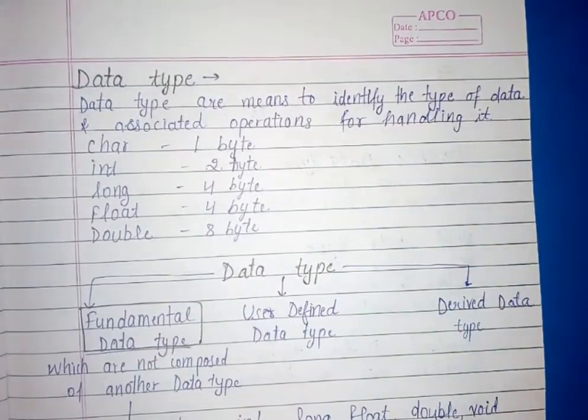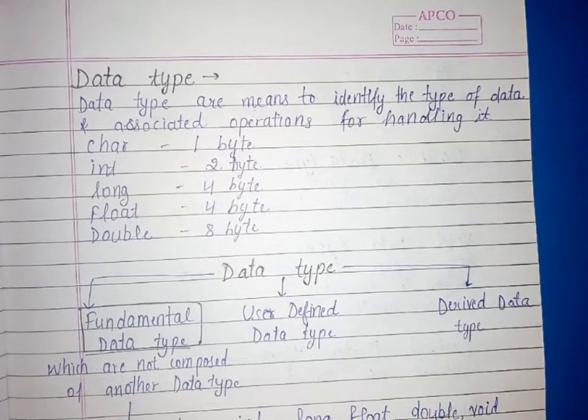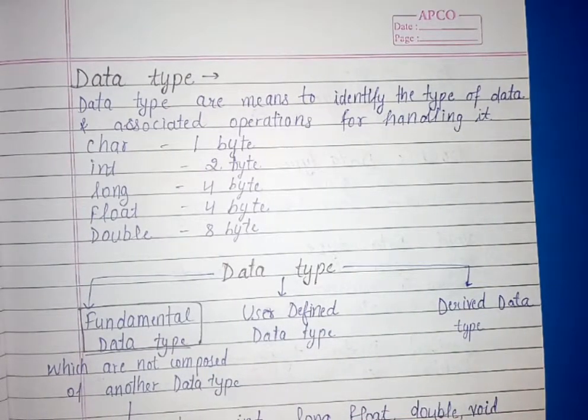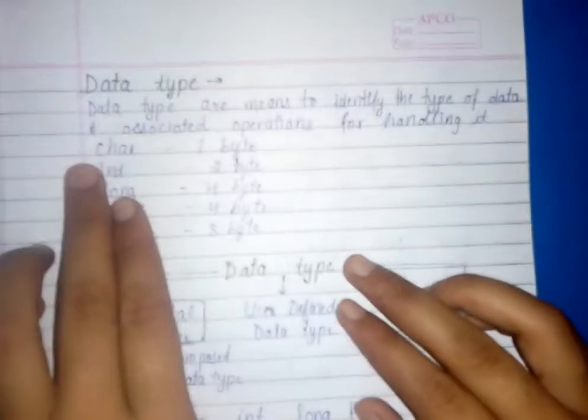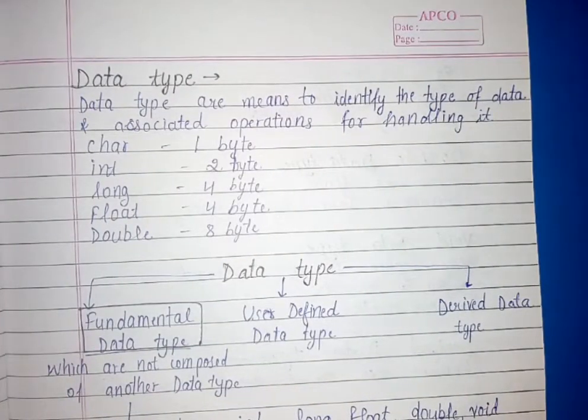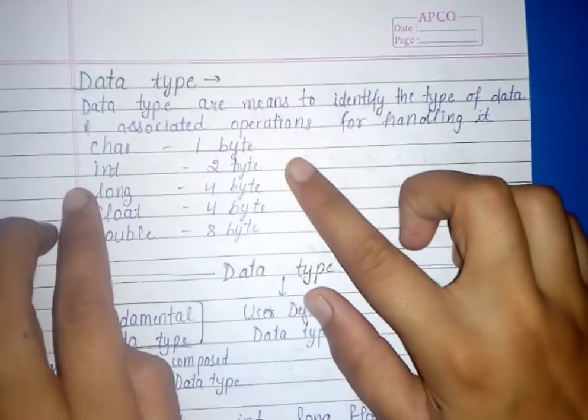What are data types? Data type means to identify the type of data and associated operations for handling it. Data types are the ones that help us identify the data. Character type means one word - A, P, these are all characters. One byte memory.